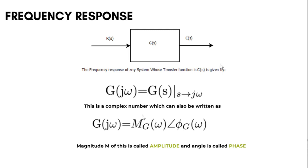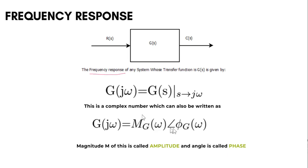Now let's talk about the mathematics of frequency response. This is the open-loop transfer function G(s). To get the frequency response, we put s equal to jω. When we do that, we can represent this complex number in the form of a magnitude M and an angle φ. The magnitude is also called amplitude, and the angle is also called phase. In Bode plots, we plot M and φ versus the frequency of the system.